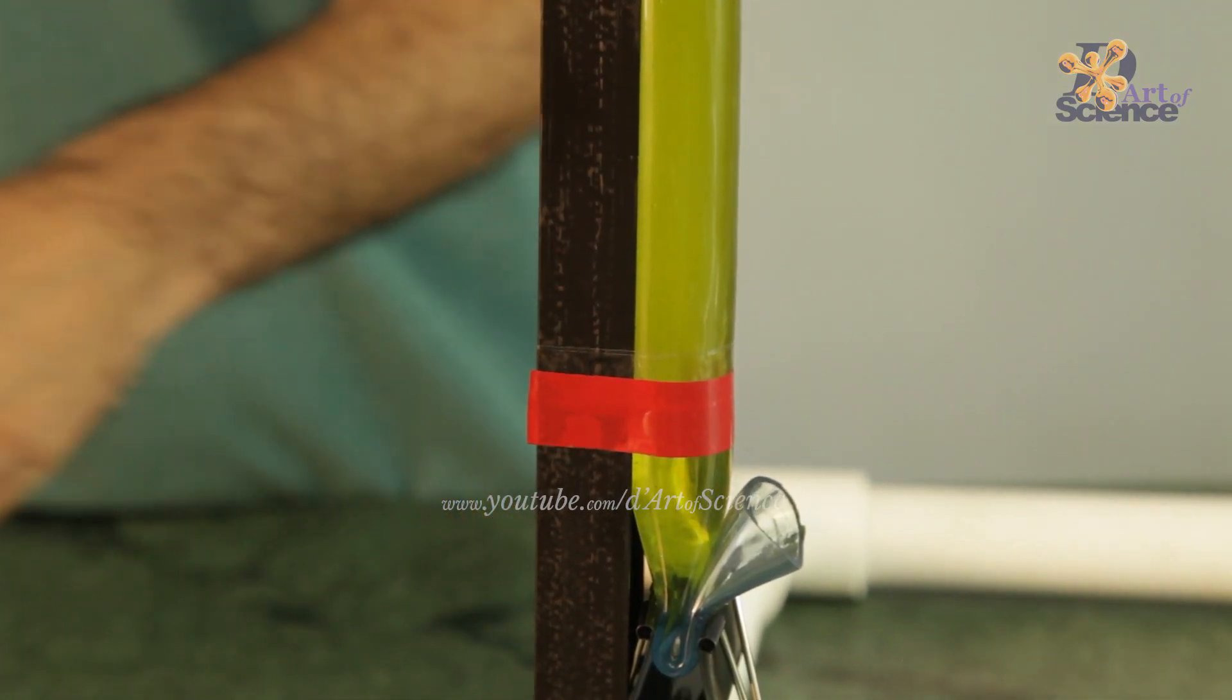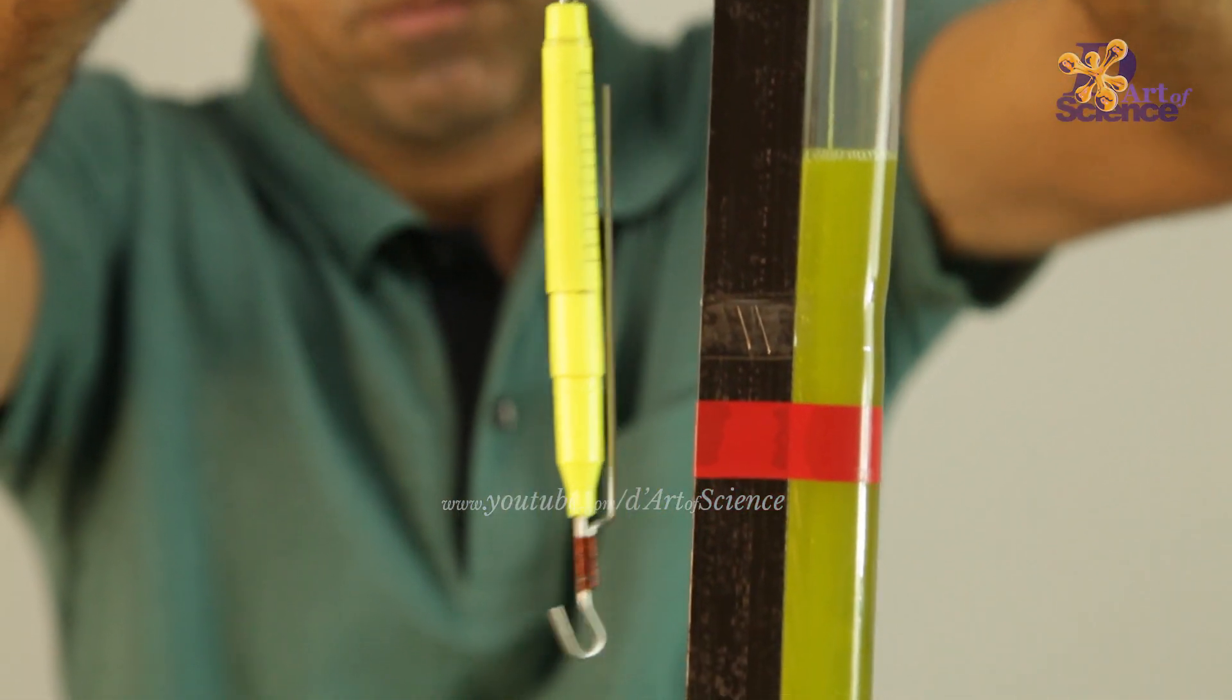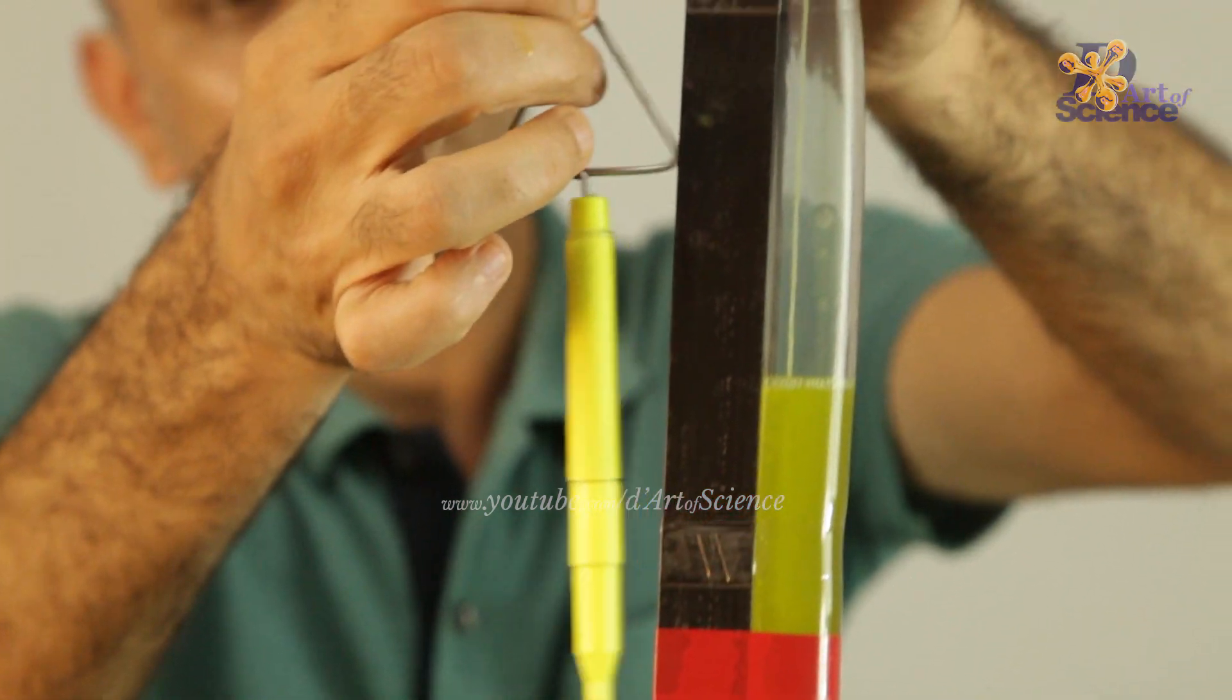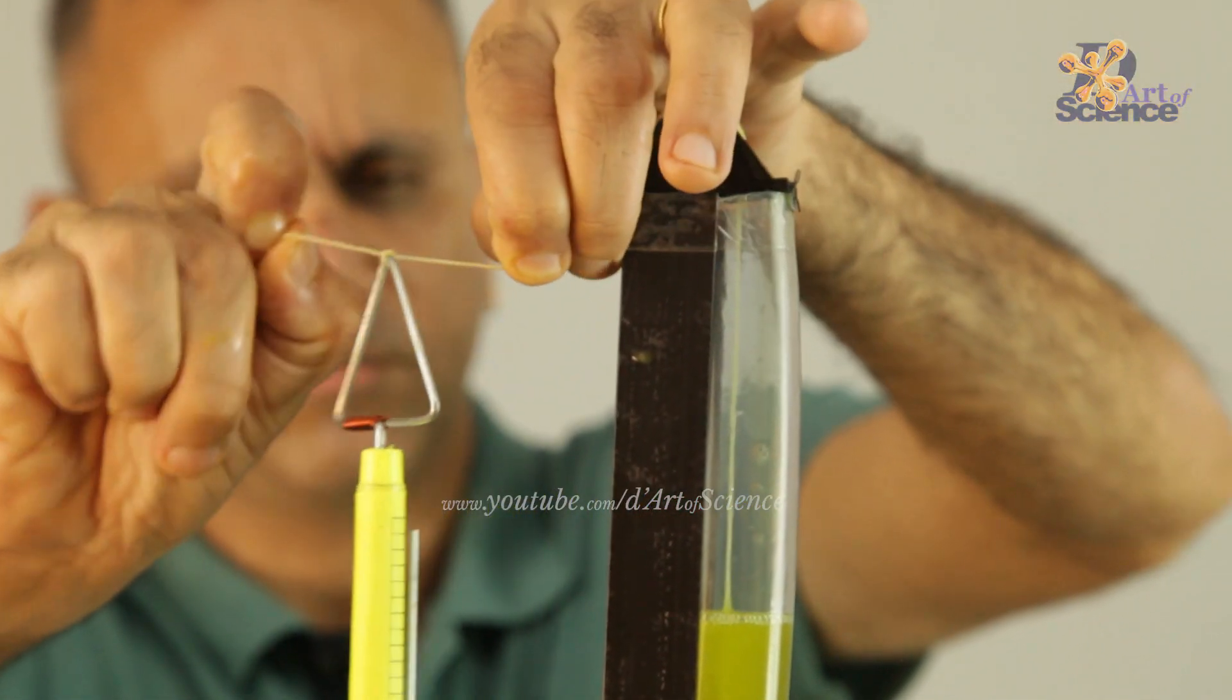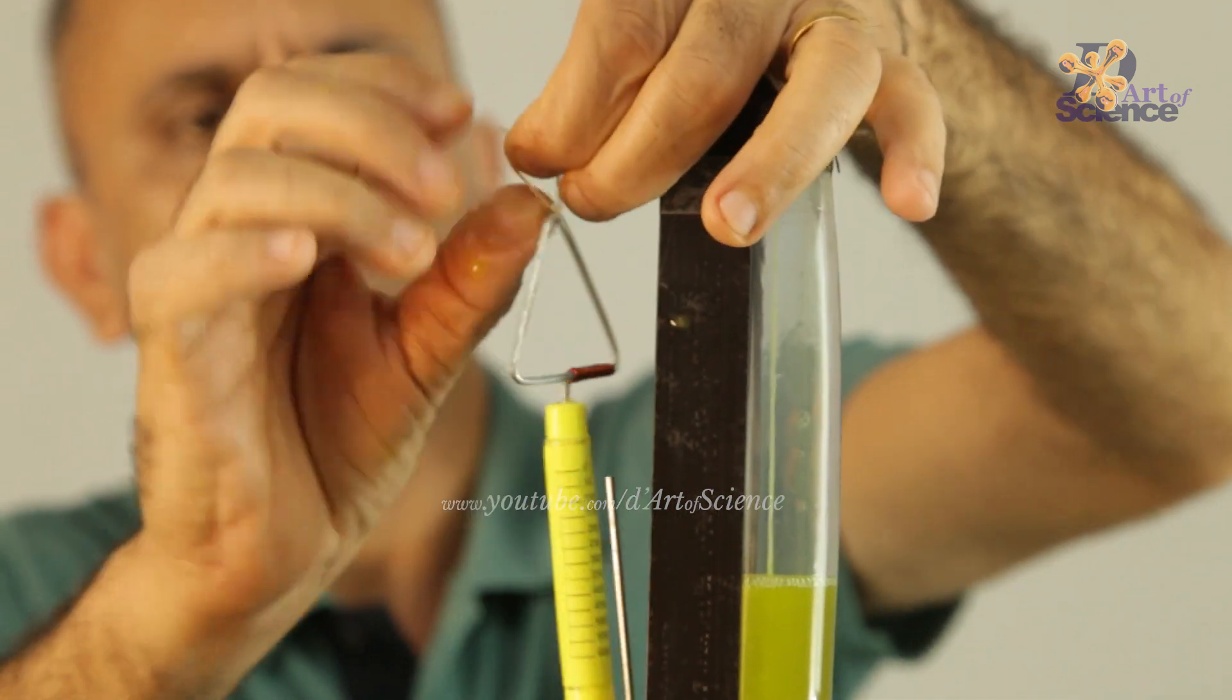Now we'll see how the speed of the objects affects friction. You need to add a spring balance on the thread instead of the weight. The DIY of the spring balance is in our regular videos on the channel and the link is also in the description below. Tie the spring balance at almost the same part of the thread where the bolt was attached.